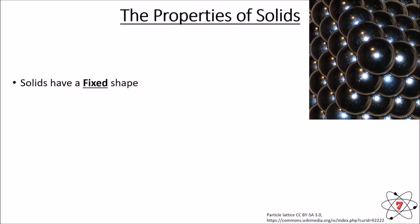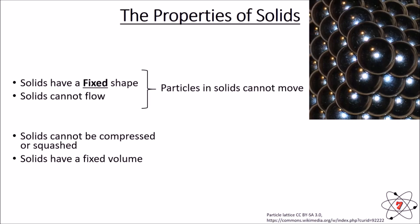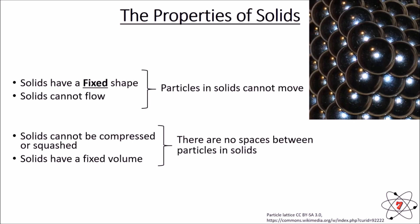Solids have a fixed shape, cannot flow, cannot be compressed or squashed, and have a fixed volume. The reason for this is that solid particles cannot move, so the shape cannot change. Since particles cannot move past each other, solids cannot flow. If you try to squash a solid, the particles have nowhere to go — there are no gaps — so you cannot compress a solid, and it therefore maintains a fixed volume.